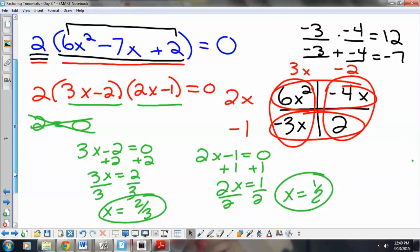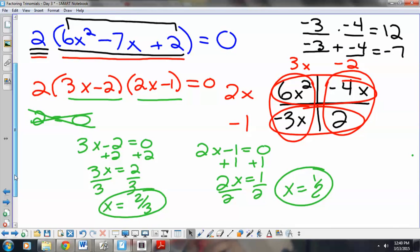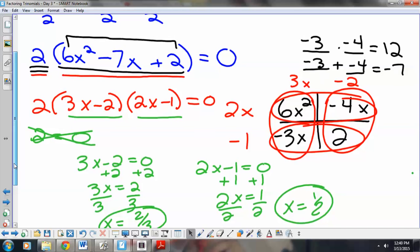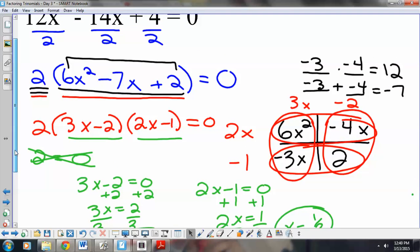So, at this point, the only thing that is different than we have done previously is we're incorporating both greatest common factor and box method. So, the procedure that we did on this problem, the first thing I had to do was figure out my greatest common factor, which was 2. I factored the 2 out and I had a trinomial left.